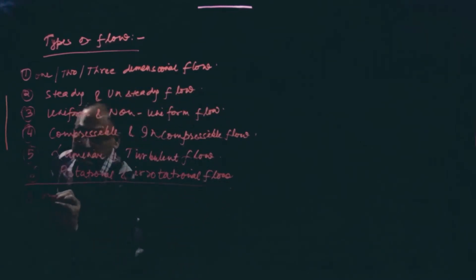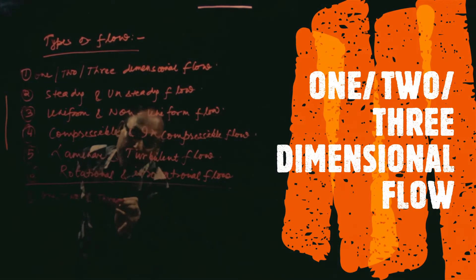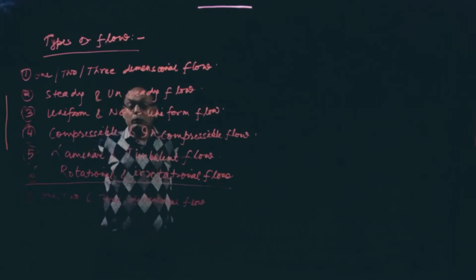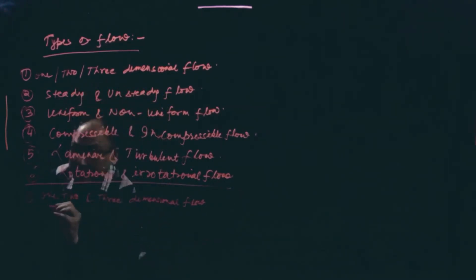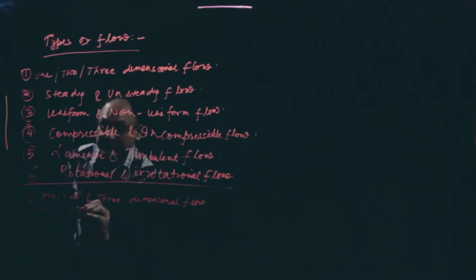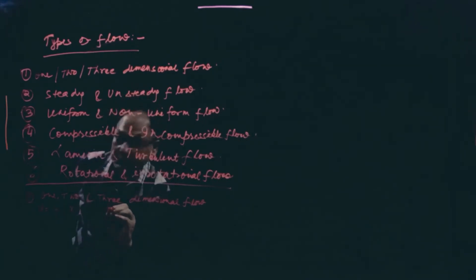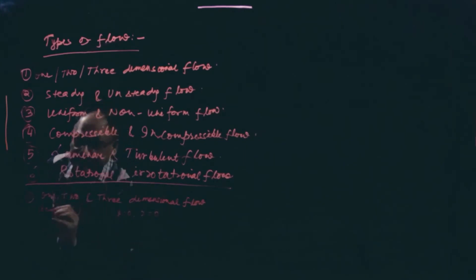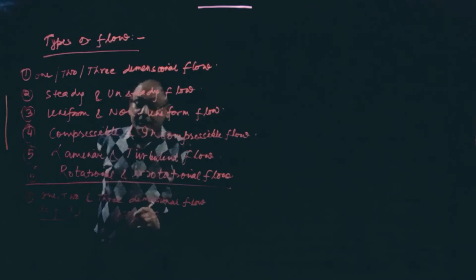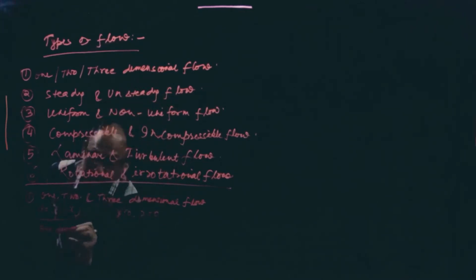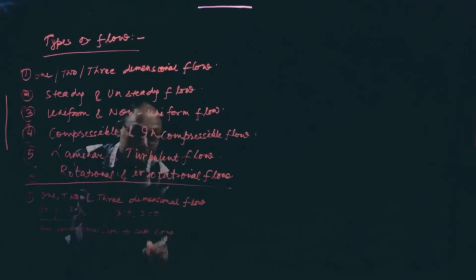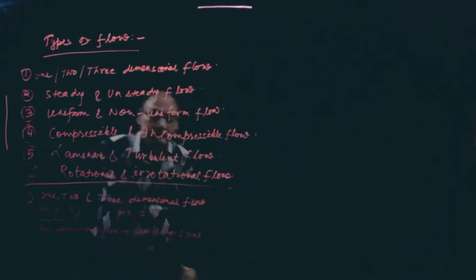Number one: one, two, and three dimensional flow. If the flow parameters — that is, velocity — is a function of the x direction only, meaning y equals zero and z equals zero, then velocity is a function of one dimension only. This is called one dimensional flow. An example is long pipe flow.